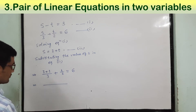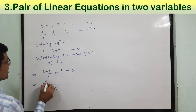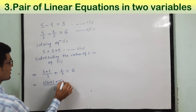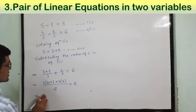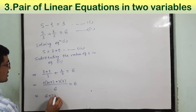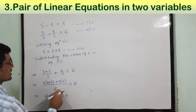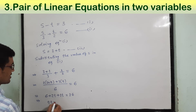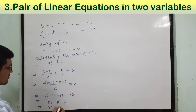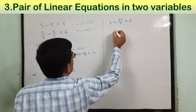We need to take the LCM of 3 and 2, which is 6 — the product itself. Multiplying, the expression becomes 2 times (3 plus t) plus 3t equals 36, which gives 6 plus 2t plus 3t. Transferring 6 to the right side, we get 5t equal to 30, and hence t equals 30 by 5, that is t equals 6.